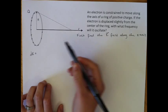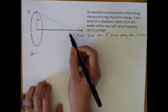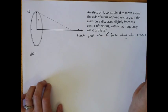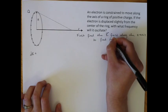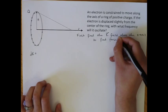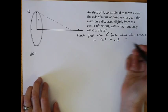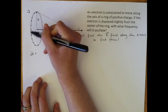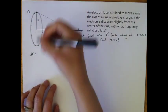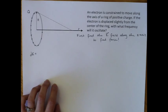So the first thing we want to do is find the electric field along the z-axis, because that will tell us the force on the particle. This is not a point charge, it's a uniform charge distribution with total charge q, so we're going to have to integrate the field.